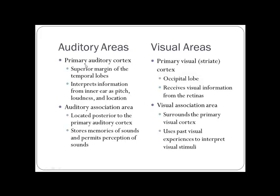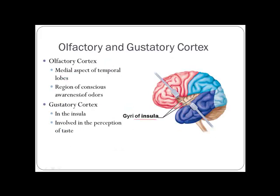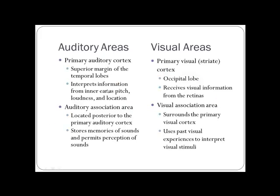The auditory areas have a primary region and an association region. The primary auditory cortex is on the superior margin of the temporal lobes — it interprets information from the inner ear, giving you pitch, loudness, and location of sound. The association areas store sound memories and let you perceive what you're hearing, such as interpreting speech as meaningful words.